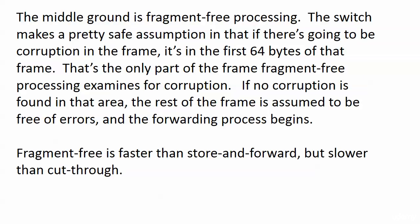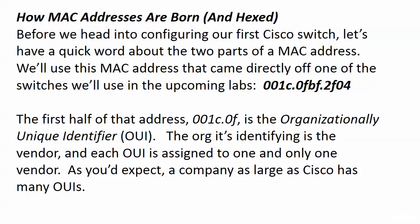The third method, fragment-free processing, is the middle ground. The switch makes the assumption — a fairly safe one — that if there's going to be corruption in the frame, it's going to be in the first 64 bytes. Fragment-free only examines the first 64 bytes for corruption. If no corruption is found there, the forwarding process begins. As for speed, fragment-free is faster than store-and-forward but slower than cut-through.